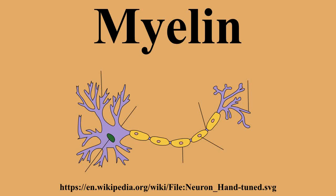Demyelination is the loss of the myelin sheath insulating the nerves, and is the hallmark of some neurodegenerative autoimmune diseases, including multiple sclerosis, acute disseminated encephalomyelitis, neuromyelitis optica, transverse myelitis, chronic inflammatory demyelinating polyneuropathy, Guillain-Barré syndrome, central pontine myelinosis, and inherited demyelinating diseases such as leukodystrophy and Charcot-Marie-Tooth disease.